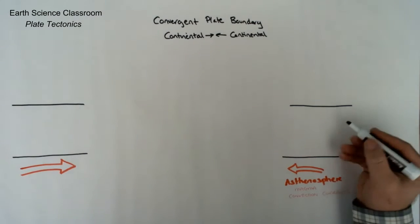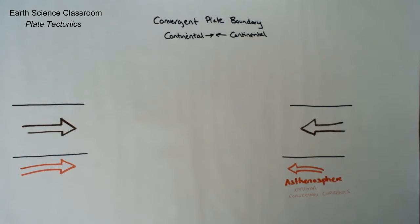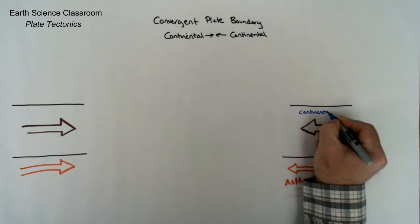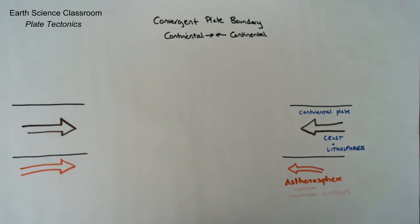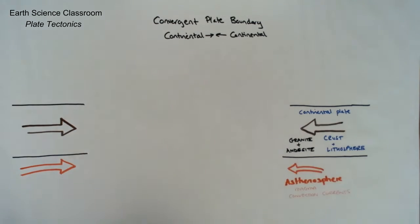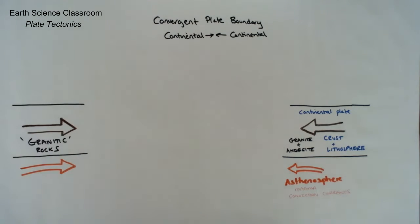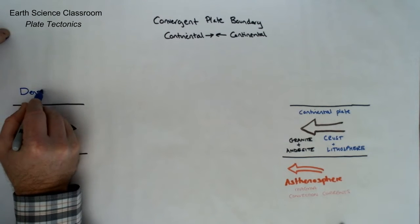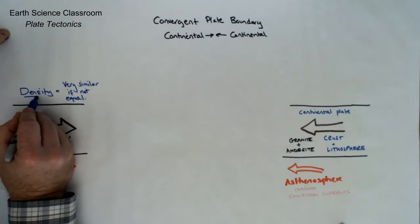On both sides of the diagram, we have our continental plate, made of crust and lithosphere — our solid rigid surface layer — which can vary between 25 to 100 kilometers thick. Below it, we have the asthenosphere, which is our plastic, able-to-flow layer, including magma and convection currents, which is the basic mechanism for moving the plates above. Our continental plates are composed of mostly granitic rocks — granite and andesite — with a density of around 2.7 grams per centimeter cubed.